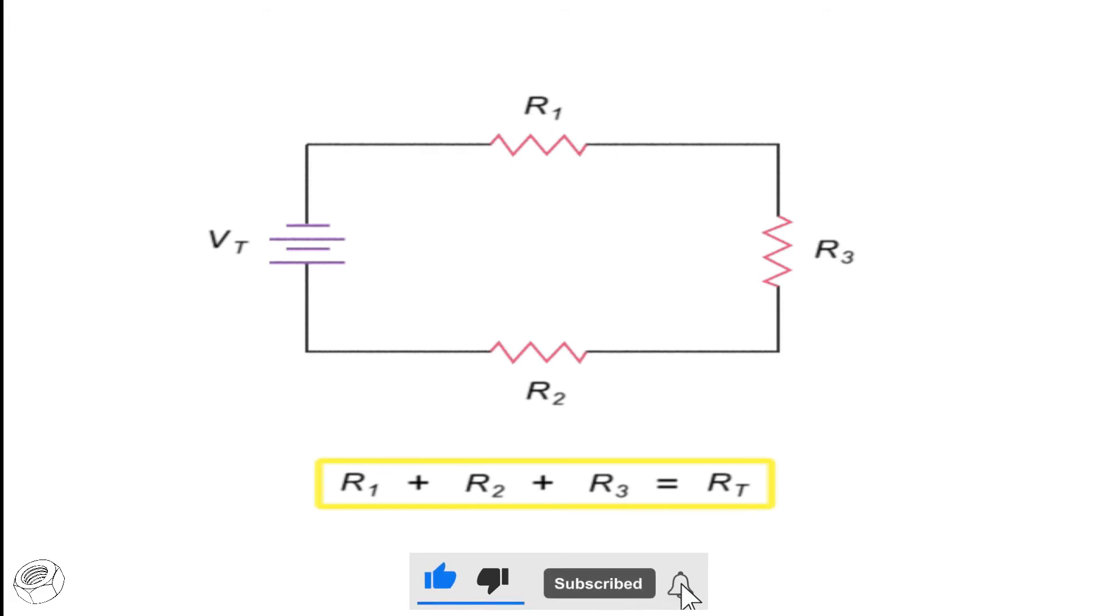So, if R1 has a resistance of 20 ohms, R2 a resistance of 30 ohms, and R3 a resistance of 10 ohms, the total resistance of the circuit is 60 ohms.